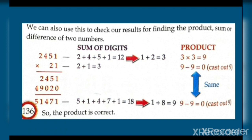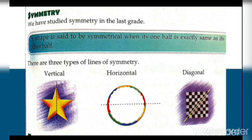Symmetry: we have studied symmetry in the last grade. Ek shape tabhi symmetrical hoti hai jab uska ek part doosre part se bilkul same ho. There are three types of lines of symmetry: vertical (seedha kaatna), horizontal (lete mein kaatna), aur diagonal (tede mein kaatna). Jaise star ko vertical kaata, circle ko horizontal kaata, aur square ko diagonal mein kaata — dono parts same hue.